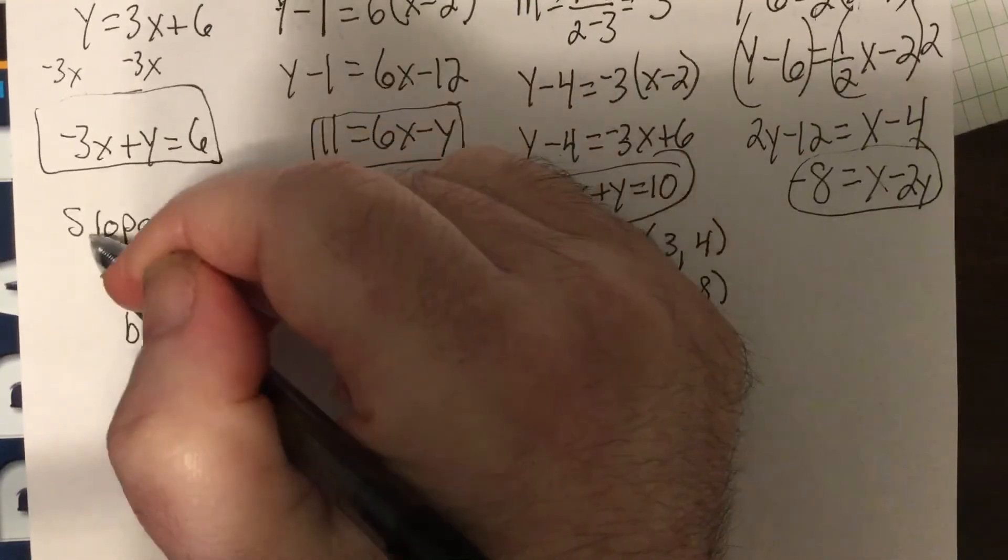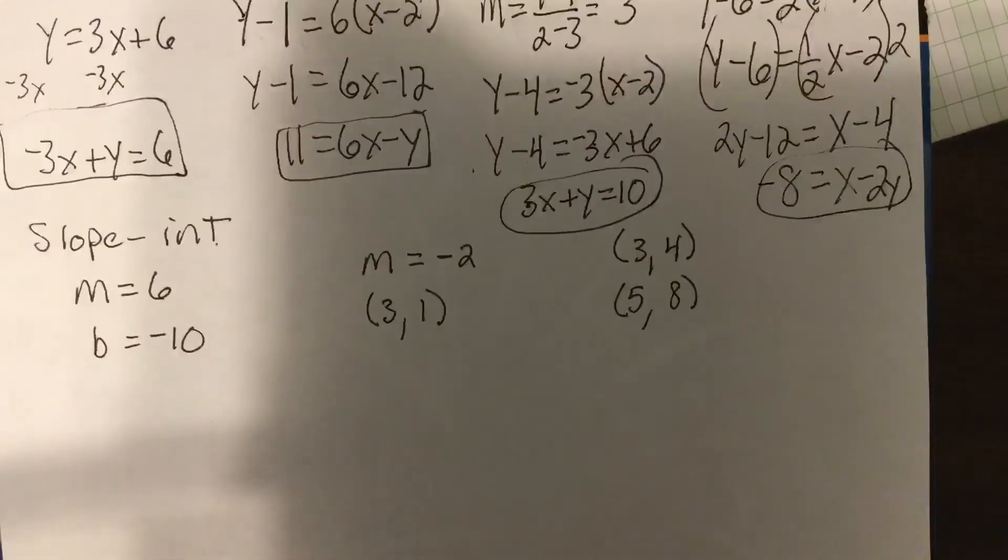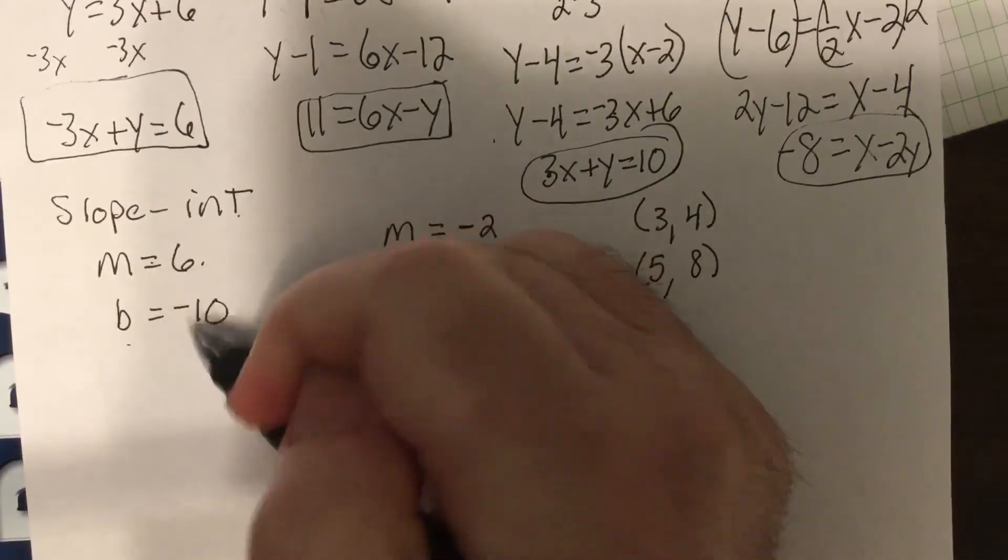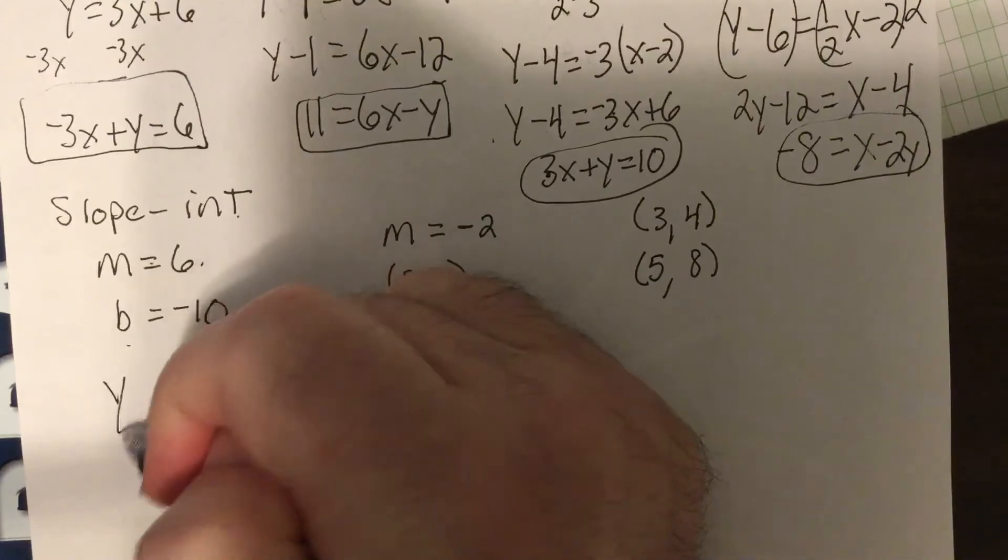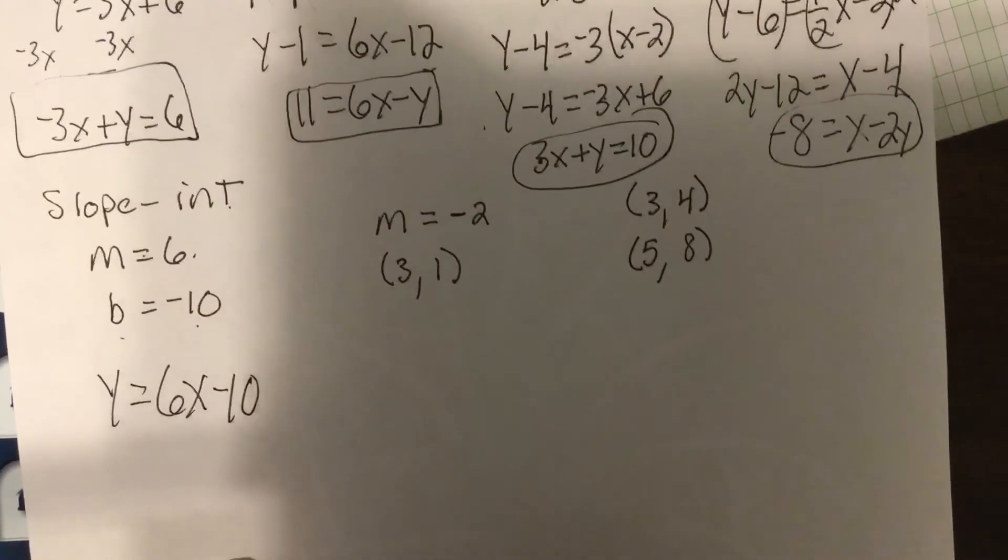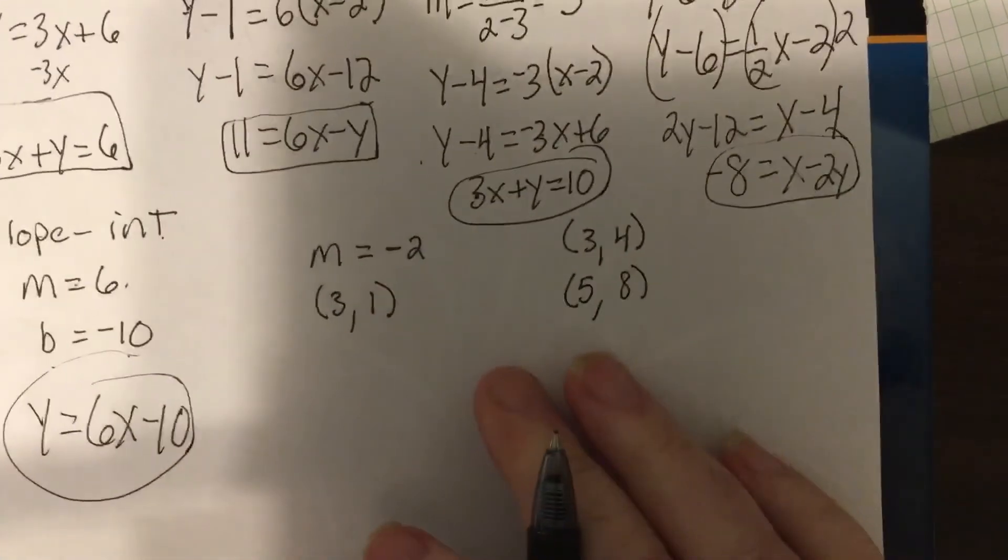Now, this one, I want the answer to be in slope-intercept form. They'll ask for different ways. So, I got the slope, I got the intercept. I'm going to use slope-intercept. y equals 6x minus 10. I'm done! It's in slope-intercept form. Holy cheese, was that easy.